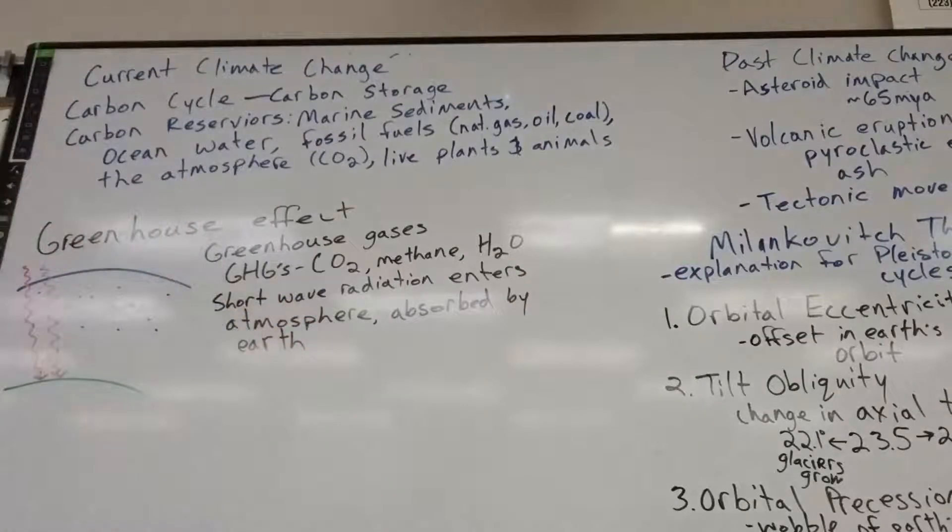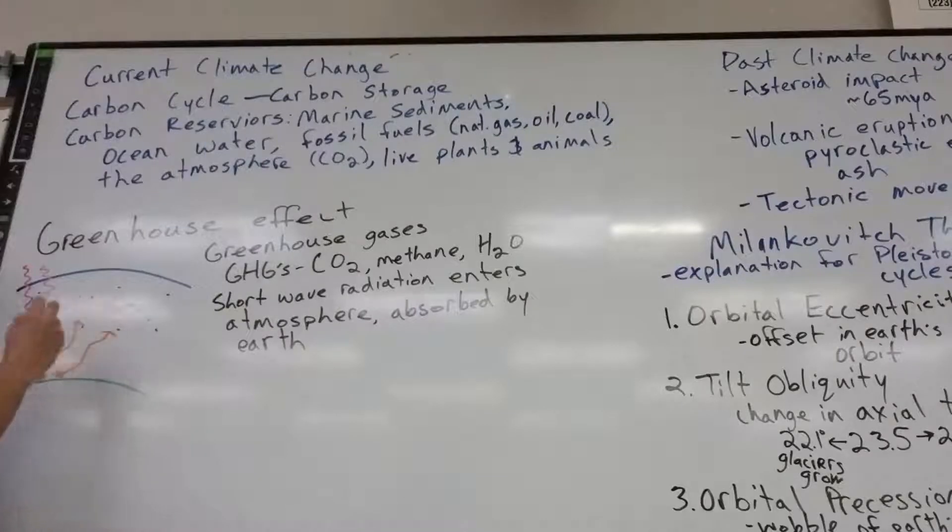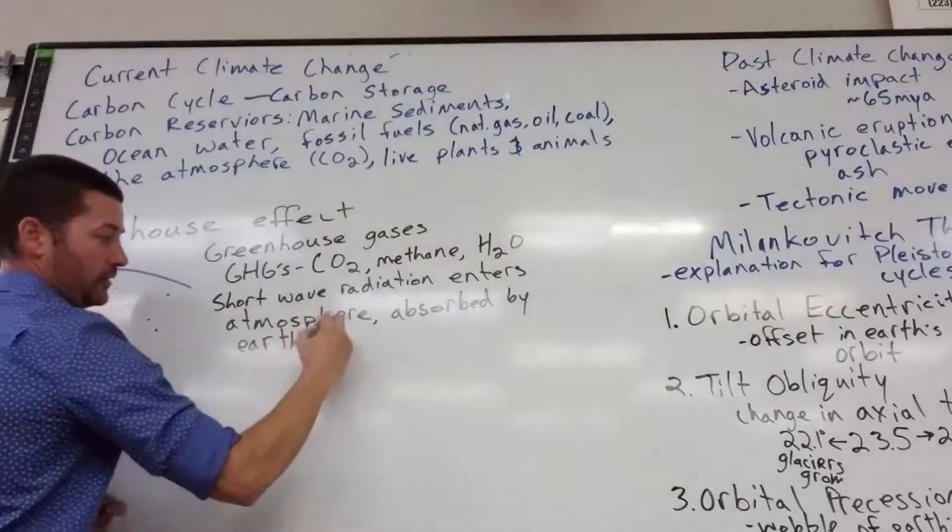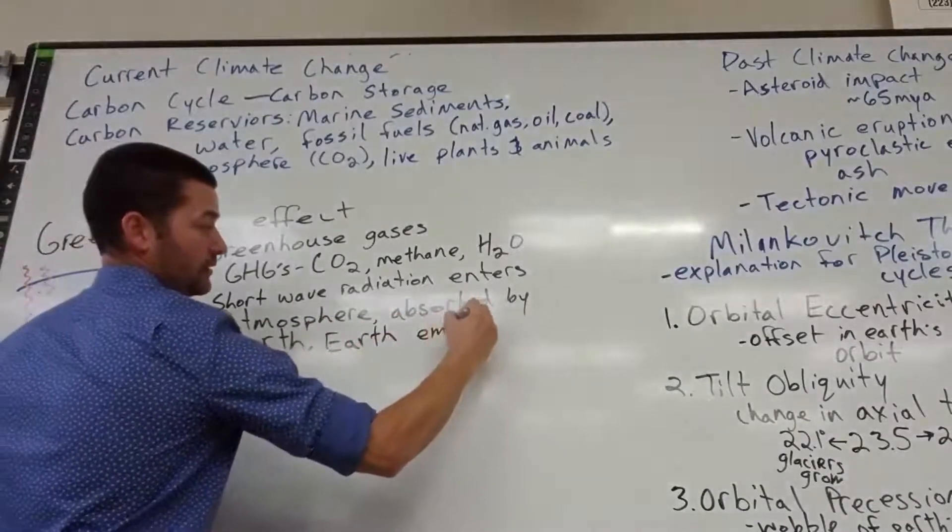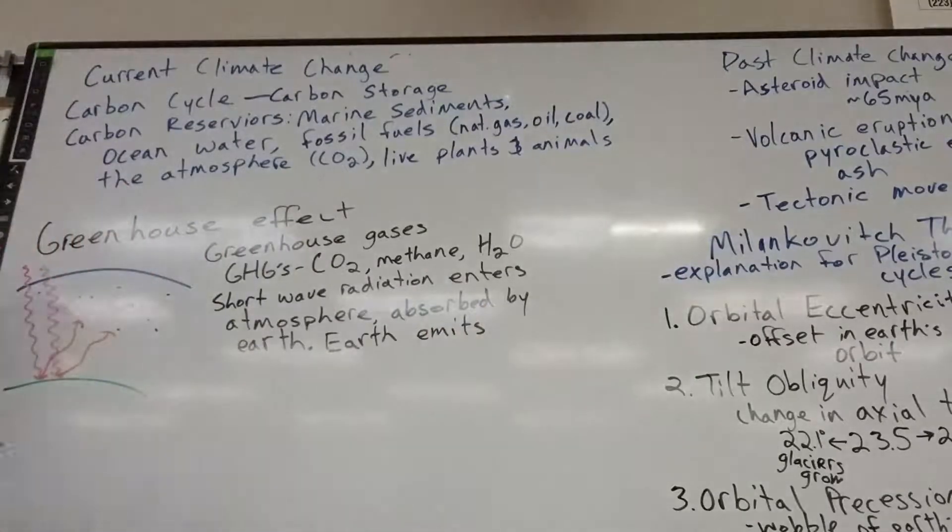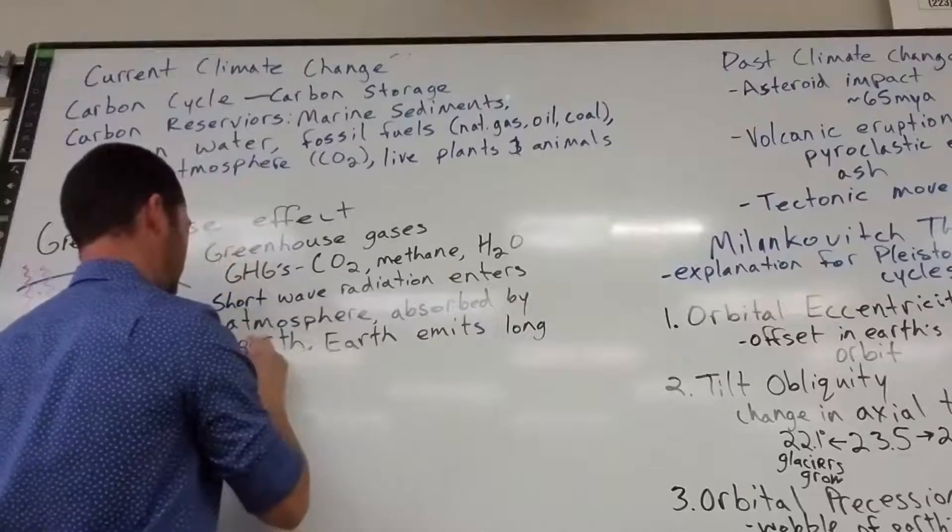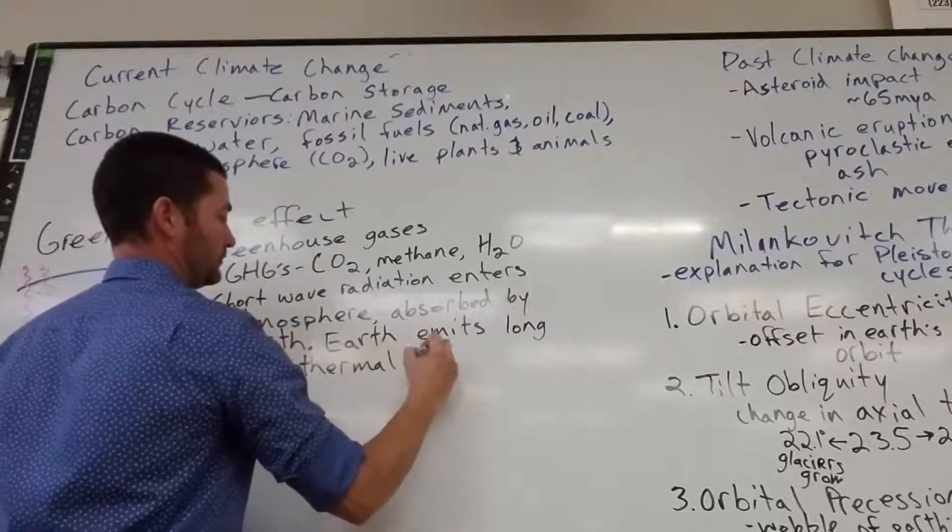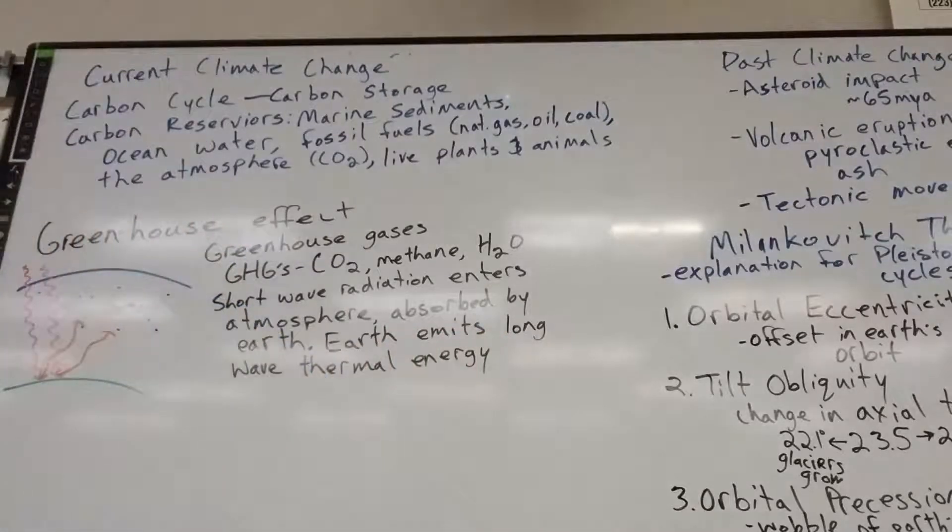You already knew. Some of it gets reflected. Some of it gets scattered. Some of it gets absorbed by land or water. And then it conducts to different surfaces, right? So that enters the atmosphere and is absorbed by Earth. All right. So we absorb that incoming solar radiation. Now, the Earth emits that radiation as thermal energy. Longwave thermal energy is emitted. Earth emits or releases longwave thermal energy.